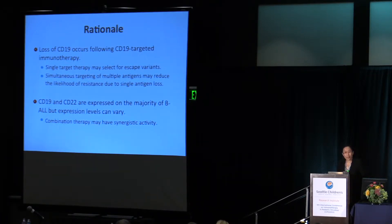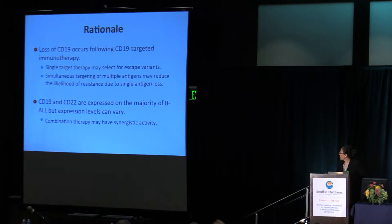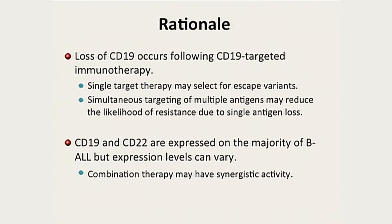Conceptually, if we target both CD19 and CD22 with a bispecific chimeric antigen receptor, it could really enhance the avidity and may result in a synergistic effect, reducing the likelihood of relapse. It could also provide a more broadly active therapy for patients who have heterogeneous expression of CD19 and CD22.